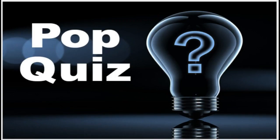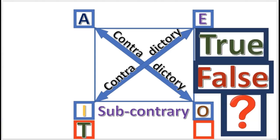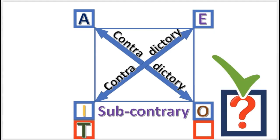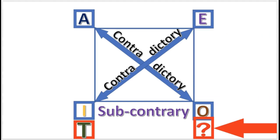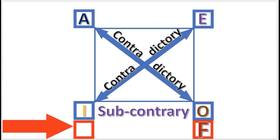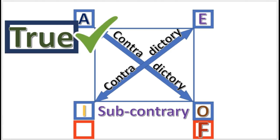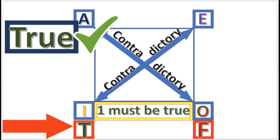Pop quiz: If I is true, what is O? The answer is: Undetermined truth value. Next practice problem: If O is false, what is I? The answer is: I is true — one must be true.